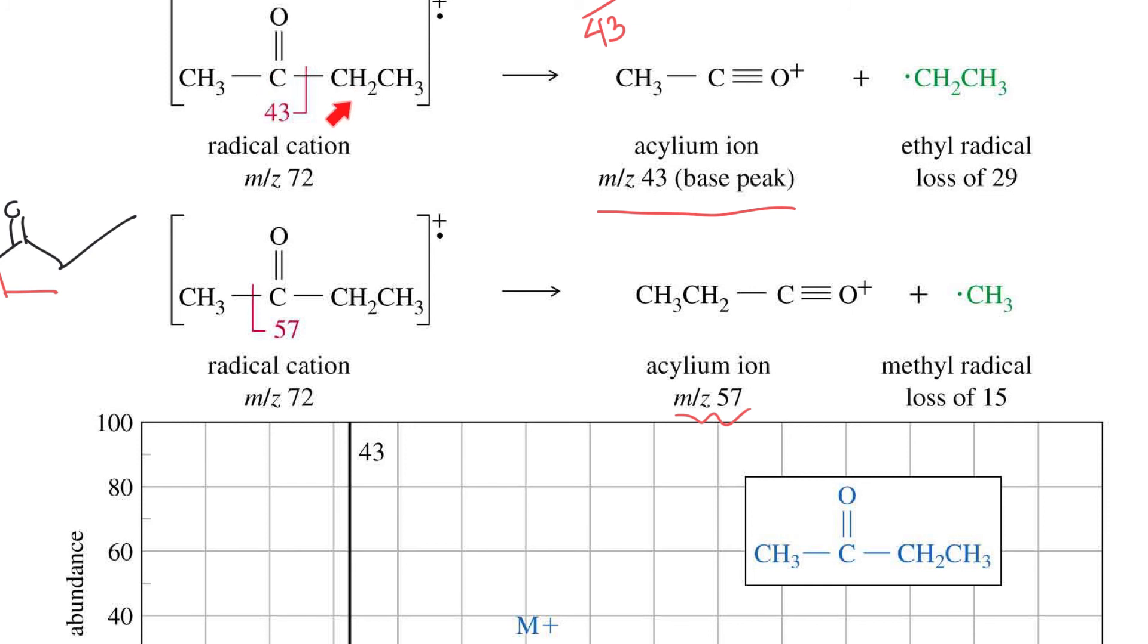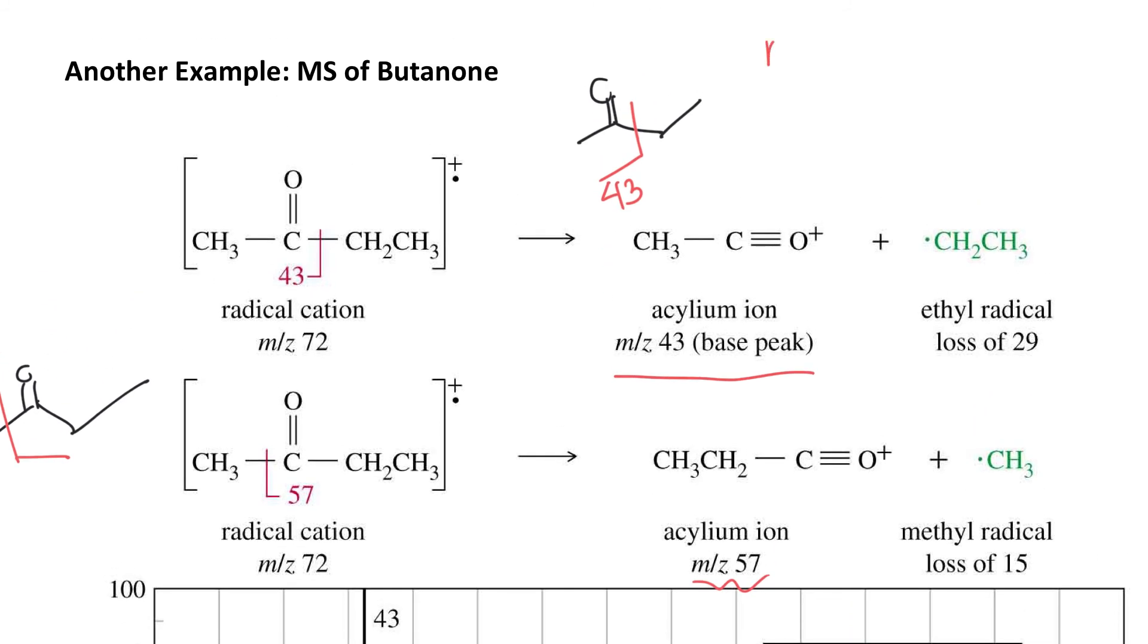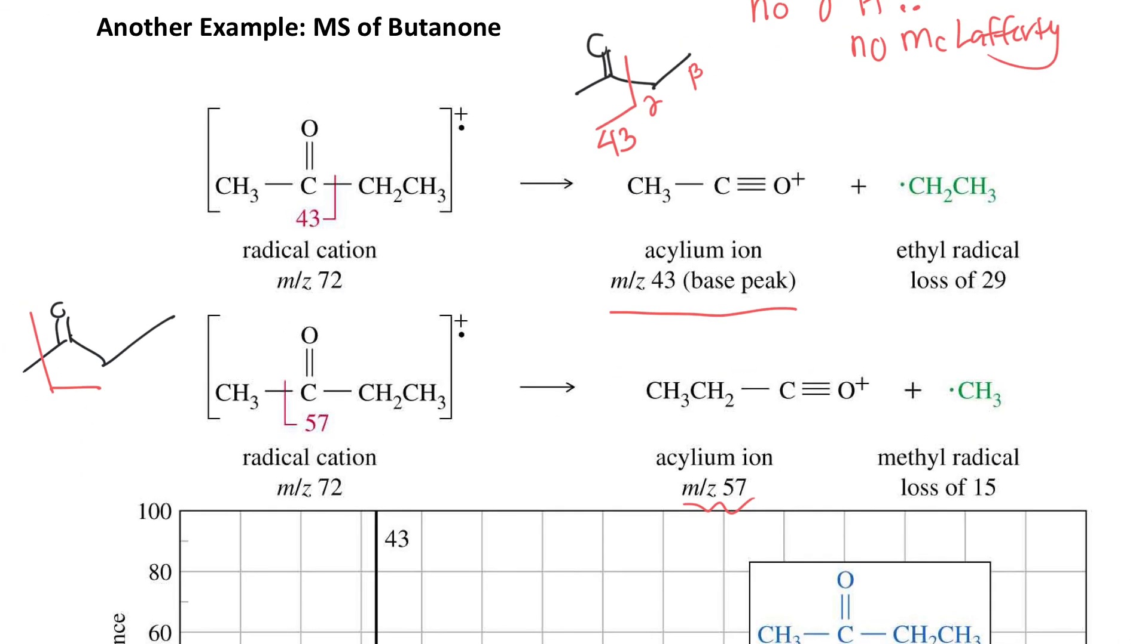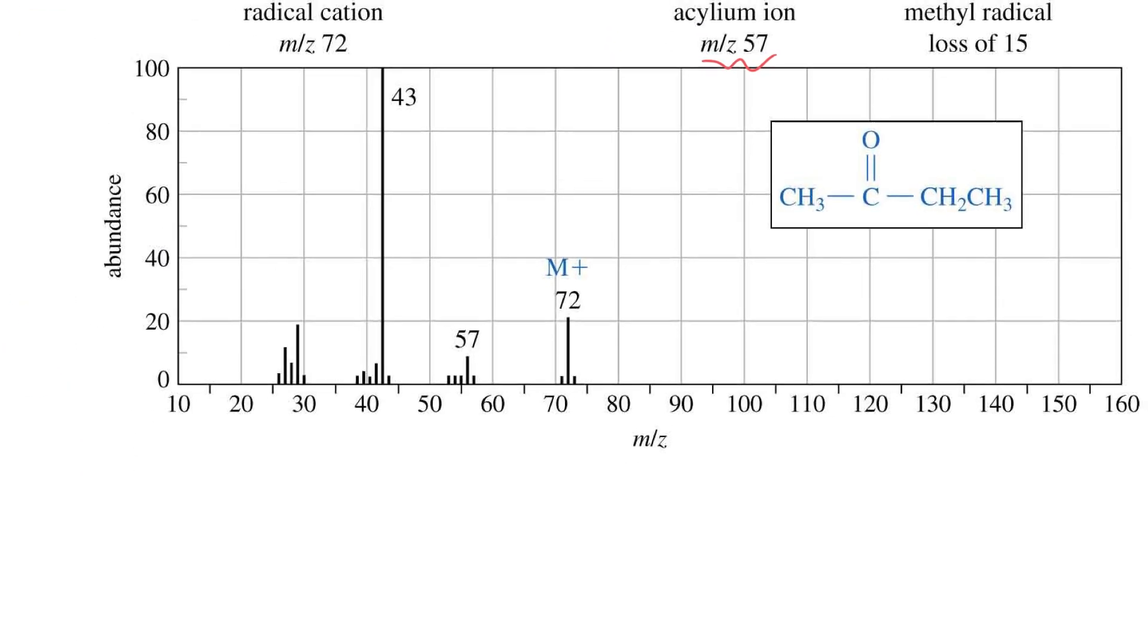We have carbonyl, alpha, beta, no gamma. So no McLafferty possible. Alpha, beta, no gamma. So no funny business with the mass spec. It should actually be more straightforward. McLafferty is just a way to explain the less obvious ones.